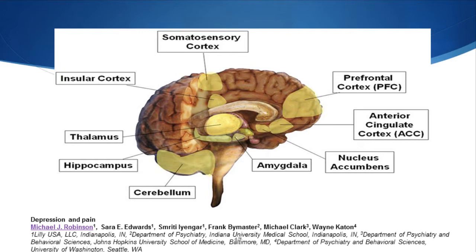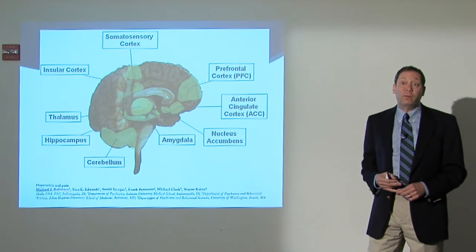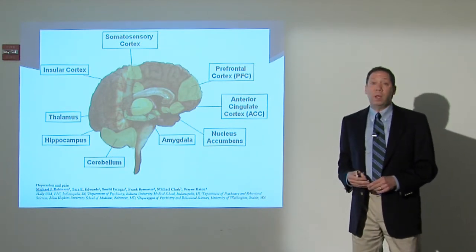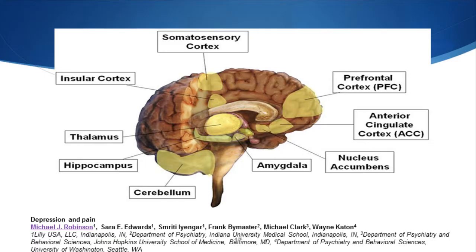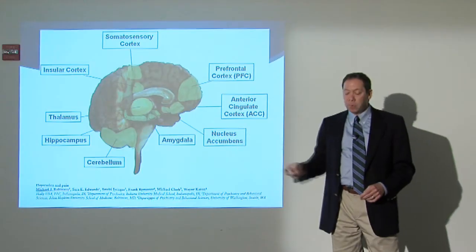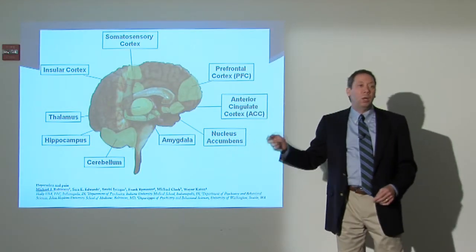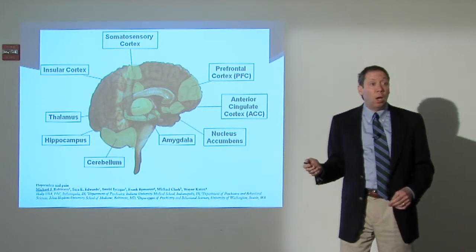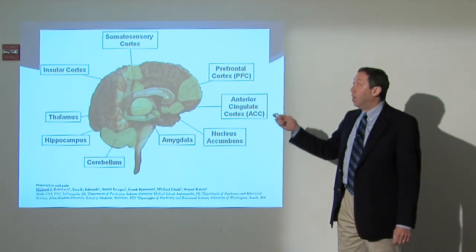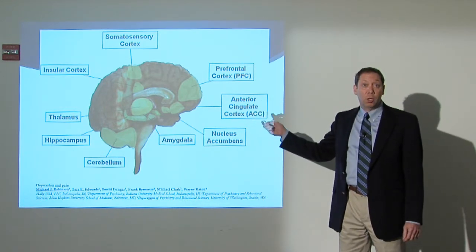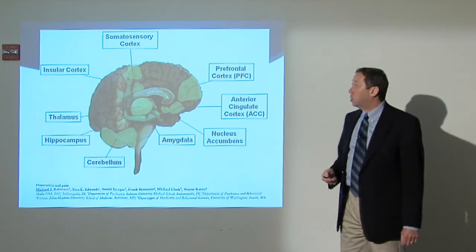The prefrontal cortex, for instance, is involved in executive functioning, and certainly executive functioning is severely impaired in people who have chronic depressive disorders. We also see loss of mass and dysfunction occurring through SPECT studies and functional MRI studies in virtually all of these brain centers in both of these diseases. So we now see common neuroendocrinologic issues, common neurotransmitter issues, and common anatomic issues going on with both these disease processes.